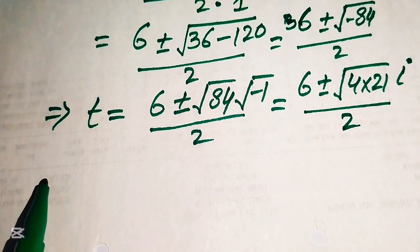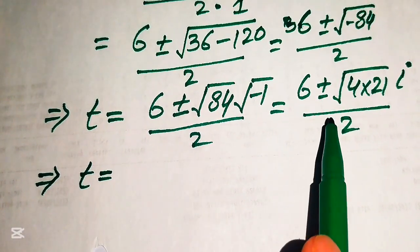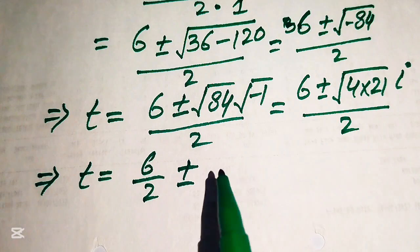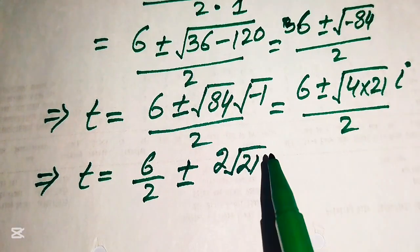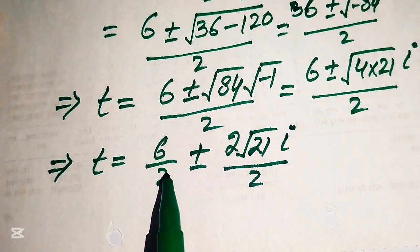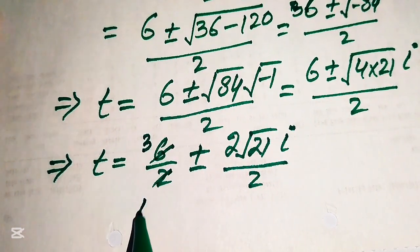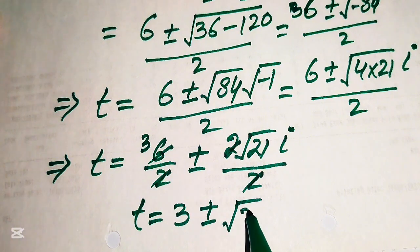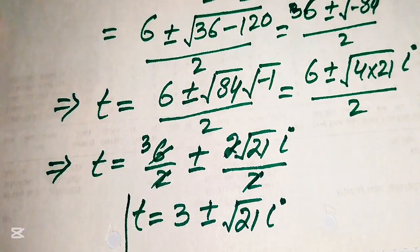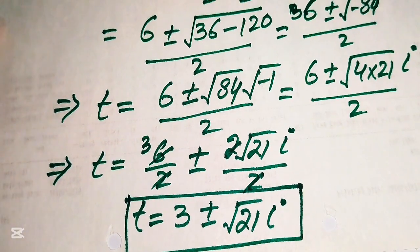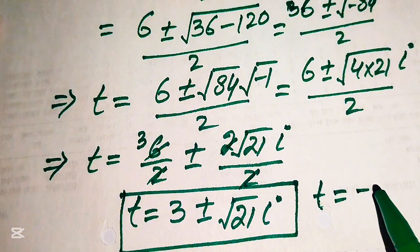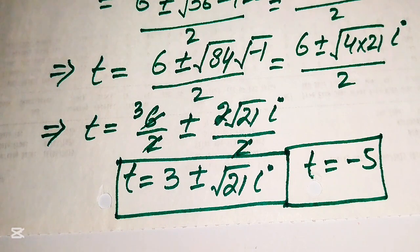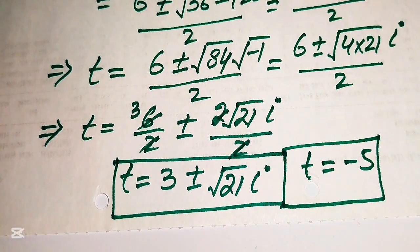Breaking the fraction: 6 over 2 gives 3, and the 2 in the numerator cancels with the 2 in the denominator, leaving plus or minus the square root of 21 times i. So t equals 3 plus or minus the square root of 21 times i are the two complex roots. The real root is t equals minus 5. These are all three roots of the given equation. Thank you for watching — please subscribe for more exciting videos.